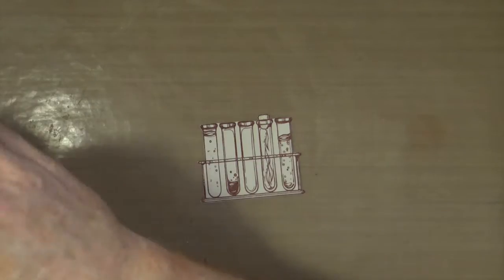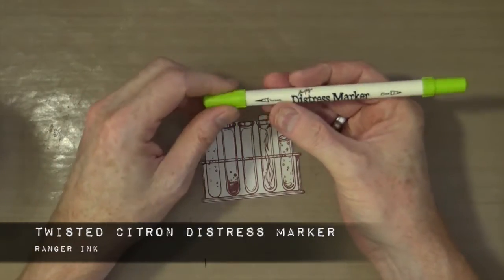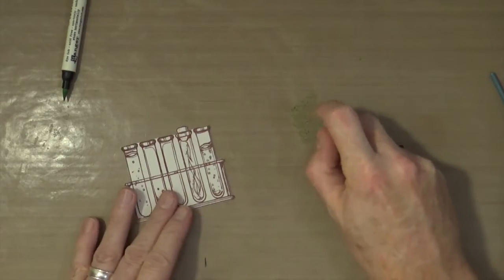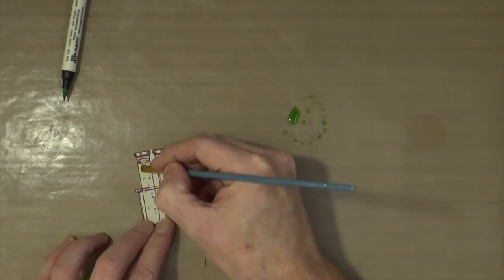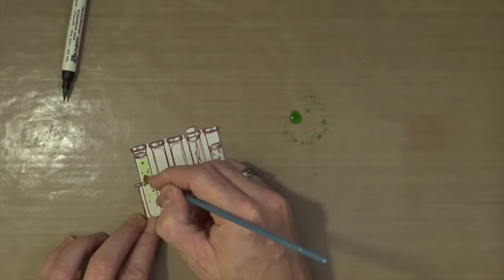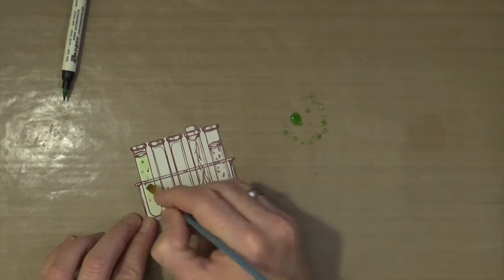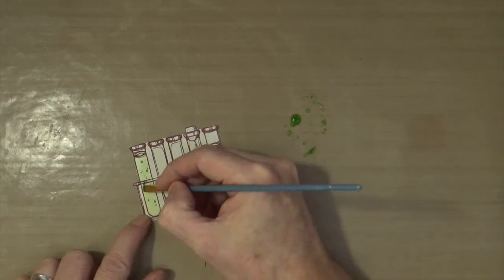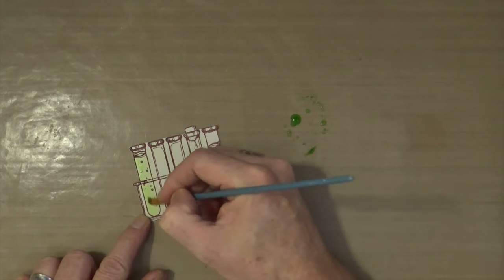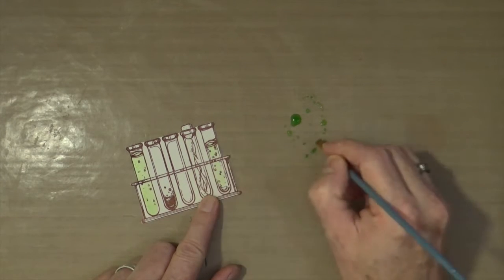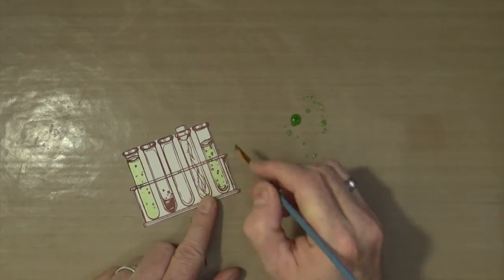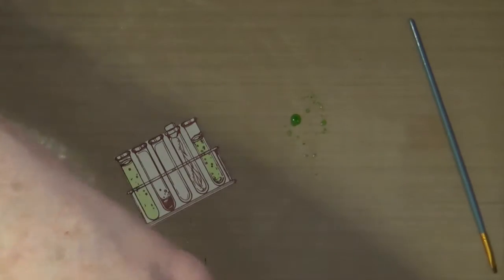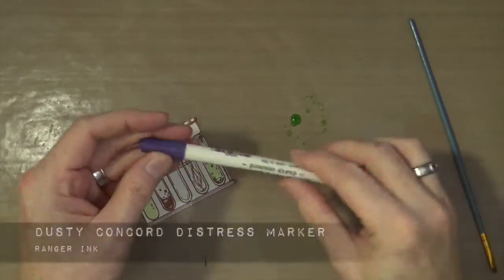Now that it's cut out, I want to add color to the test tubes. I'm taking the Twisted Citron distress marker, putting some on my craft mat, spritzing water on it, then with a small detail brush painting in a watery effect color. I didn't want really strong color, which is why I didn't color directly from the marker. I'm repeating the process with different colors to add variety, using Halloween type colors.